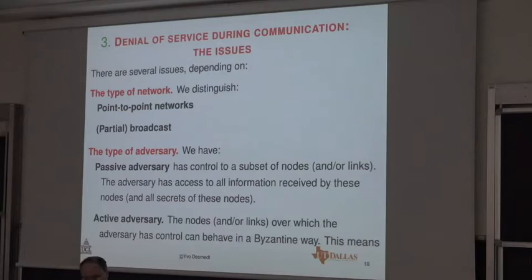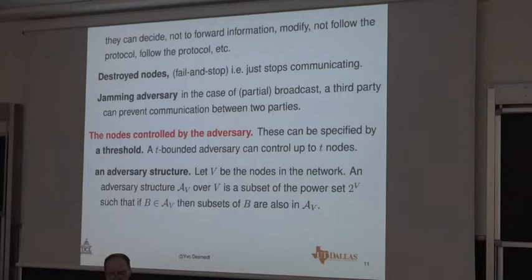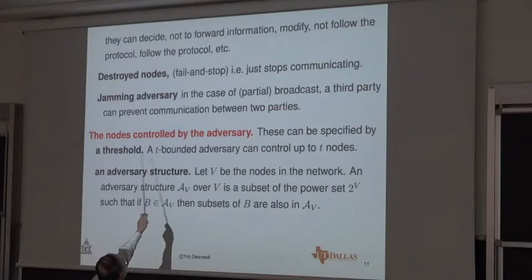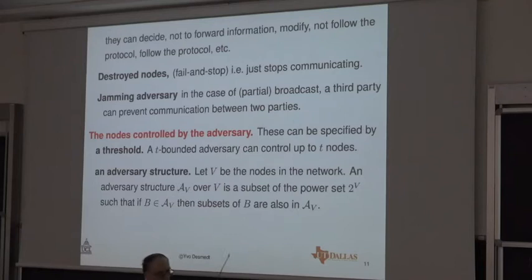I'm not going to talk about links — at least one of the references addresses that. Jamming adversaries when looking at broadcast environments — mobile, cell phone — you may also have jamming, which is a very old technique but applies in denial-of-service scenarios. Most of the work has been done on nodes controlled by the adversary, but in some papers we have also looked at edges or links. The best would be to look at both, which so far nobody has done. They are usually considered with a threshold — we consider that two or three nodes might have been taken over by the adversary — what's called a T-bounded adversary that can control up to T nodes.